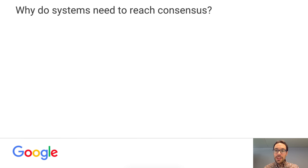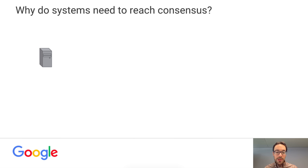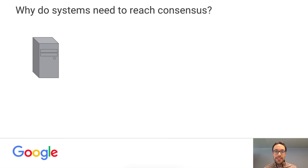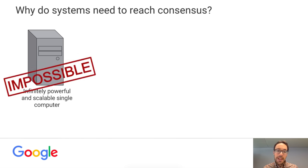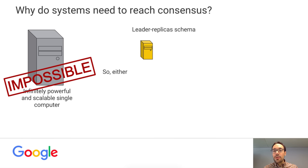Why do systems need to reach consensus? Imagine you have a workstation at your home. You write a server, make it public, start getting visits, and it becomes a success. More and more people are using it, and at some point your computer is too slow — you're running out of resources. You upgrade the RAM and the CPU, but it happens again. That has a limit: you can't have an infinitely powerful and scalable single computer. You have to go for something different. You either go for a leader and replica schema, in which one node is the leader and the other nodes are replicas.